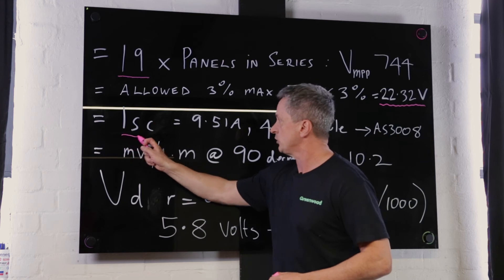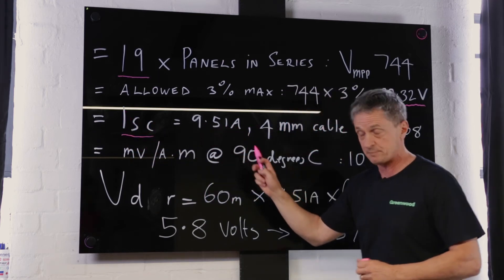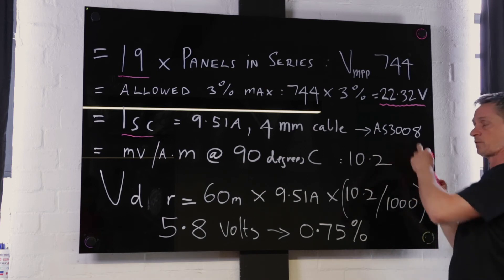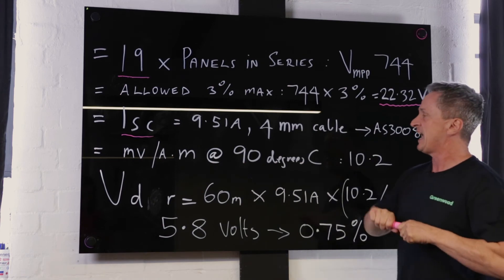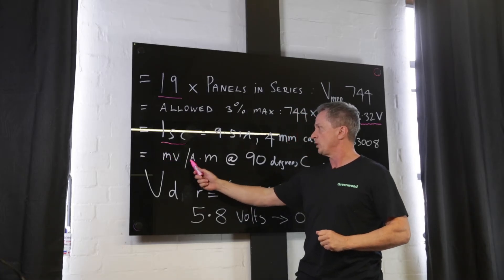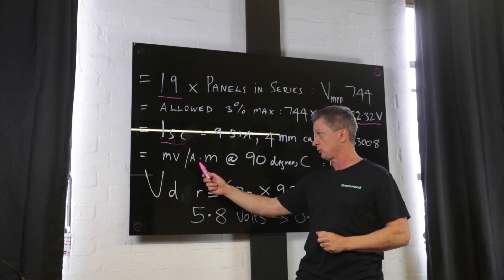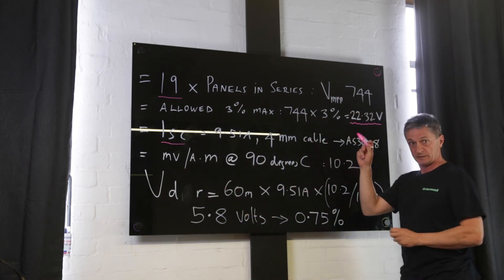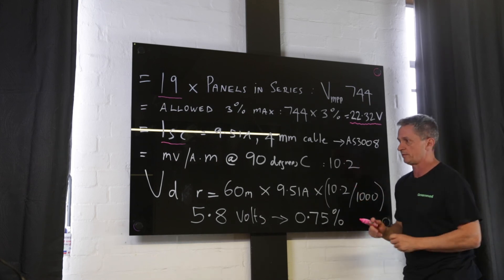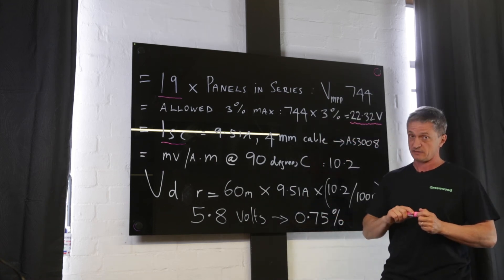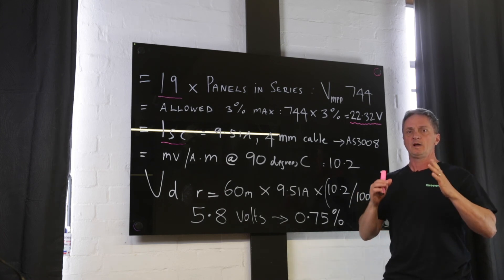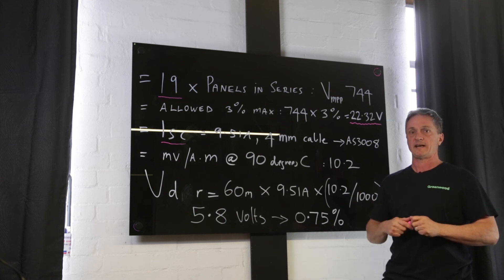The panel we're using has a short circuit current of 9.51 amps. We've selected 4mm cable and go to AS3008. We look at the millivolt per amp metre rating — for every one amp through the cable for one metre, what is the drop in millivolts at 90 degrees? For this 4mm cable it is 10.2 — a very important figure. There are other calculation methods, such as using the resistivity of copper, so please check your results with online calculators as they can really vary.